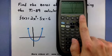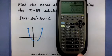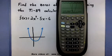I'm going to press F5, that's my math menu, and select the second option which says zero. Enter.